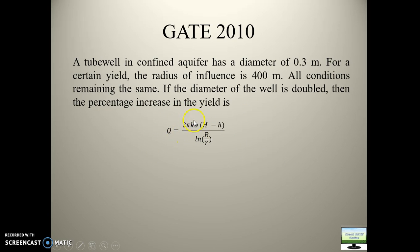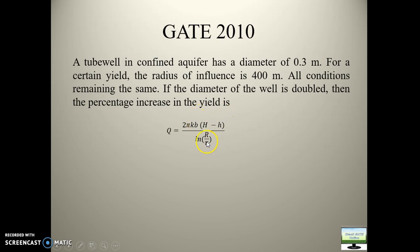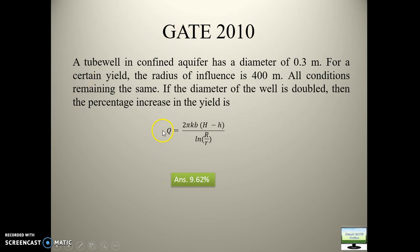I will directly write this formula. I will give the first discharge as Q1, keep the rest the same, and call the well radius R1. For the second formula, I will write Q2 equal to the same expression but with R2 equal to 2R1. Then I will calculate the increase in discharge. This simple type of question comes year after year.